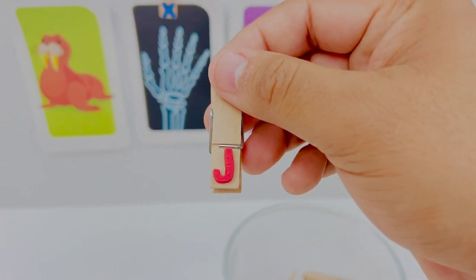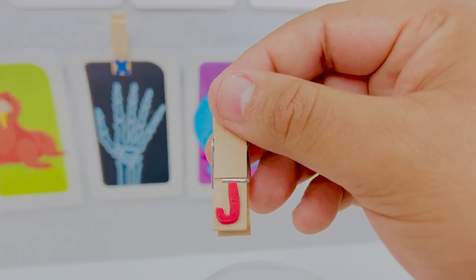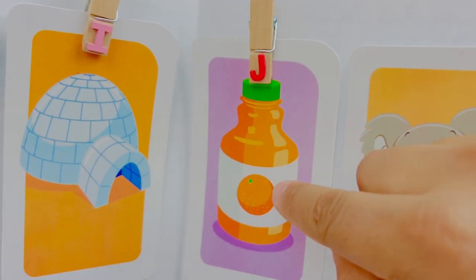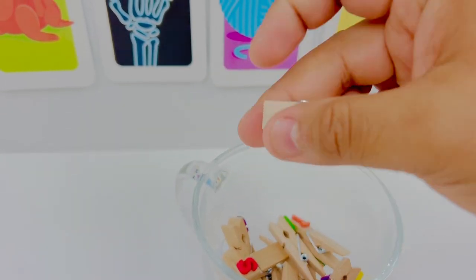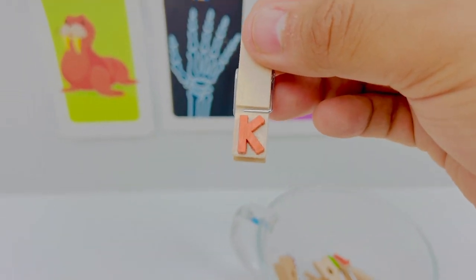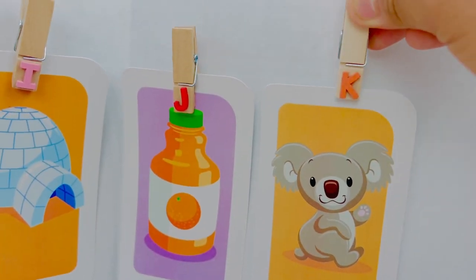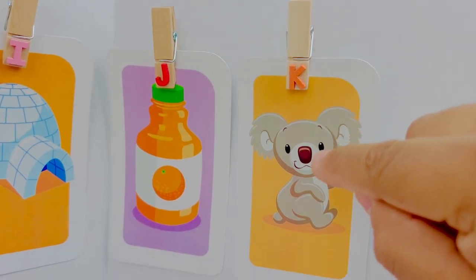This is letter J. J is for juice. J juice. This is letter K. Letter K is for koala. K koala.